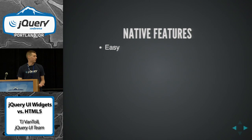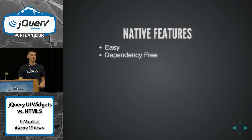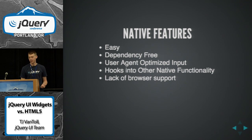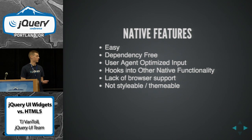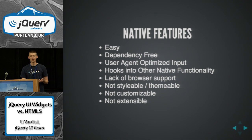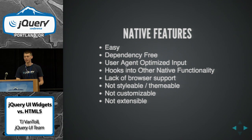To summarize what we've talked about: the native features are very easy to use — no dependencies, no scripts to load. The user agent can optimize the input; you get the nice pickers on mobile. You get hooks into other native functionality like data lists and constraint validation. But you have problems with lack of browser support — it's getting better, but if you're deploying a production app right now, chances are you can't leave out Firefox and Internet Explorer even in the latest versions. And you're really not going to have much control over these things — you can't really customize or extend on top of them.